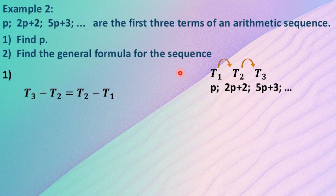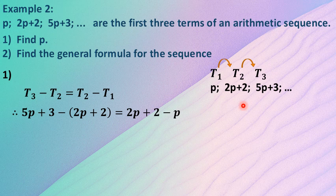Once we substitute in the relevant value for T3, T2 and T1 in terms of p, we can solve for p. So, look at how instead of T3 minus T2, I said 5p plus 3 minus (2p plus 2). Because 2p plus 2 is a binomial, it is essential that you put it in brackets. This negative needs to be distributed. Right, I'm going to give you a second. Pause this video and try and solve for p.